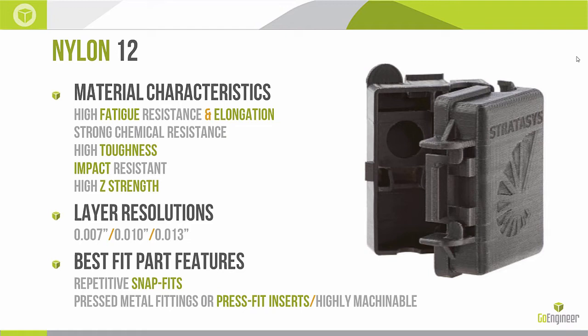Nylon 12 also has a high degree of toughness, which is great for shop floor applications — parts that get banged around and need to absorb impact energy or bending. And lastly, the high Z strength. All FDM materials are anisotropic, meaning we have different mechanical properties in the XY layer than through the XZ plane. Nylon 12 is the least anisotropic — the most isotropic material — so you'll see less degradation of mechanical properties through the Z axis.